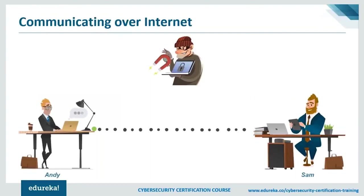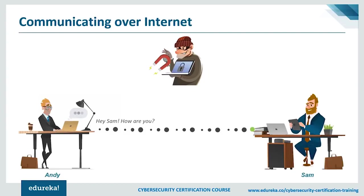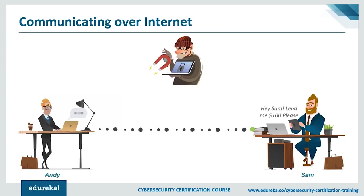Let's use an example: Andy sends a message to his friend Sam on the other side of the world. He wants this message to be private. He uses a public forum — the internet — for sending it. There's also a smart guy called Eve who secretly has access to the communication channel. Since Eve has access, he can do more than eavesdrop — he can change the message itself. If Eve gets access to private information, that could result in a big catastrophe.